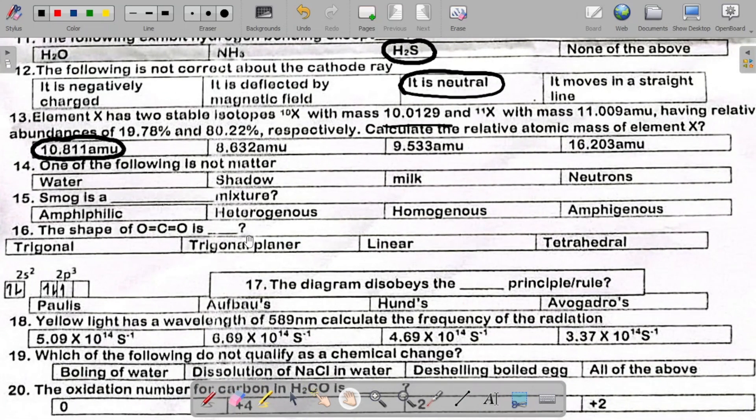Number 14 says which of the following does not matter? You have water, shadow, milk, neutrons. The answer here is shadow. Shadow is no matter. It does not matter.